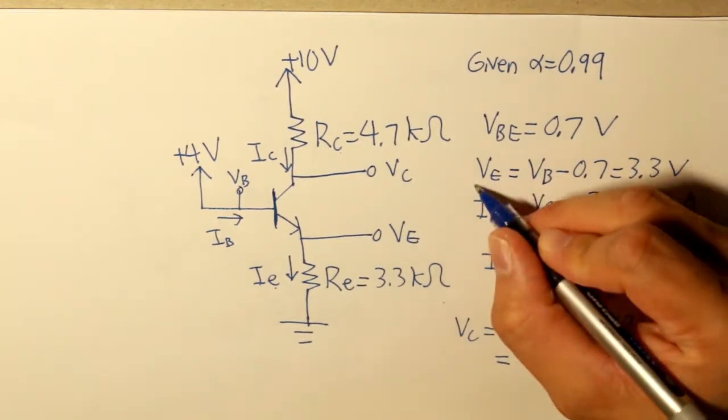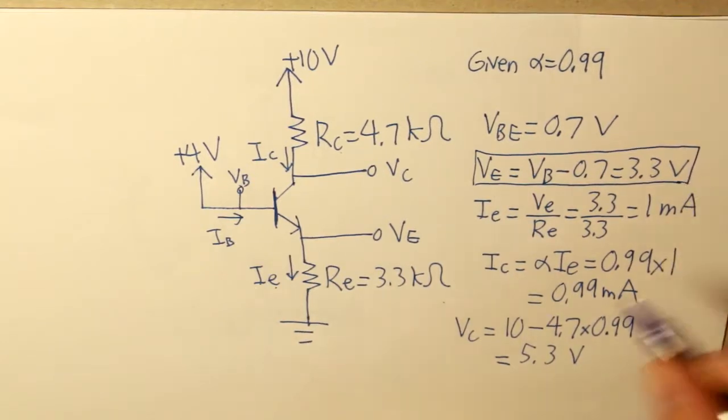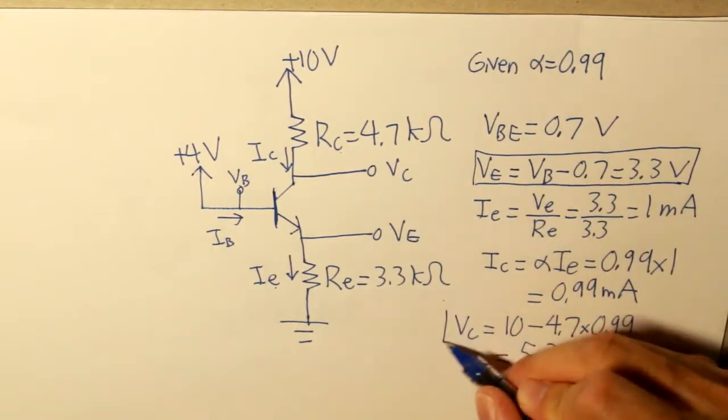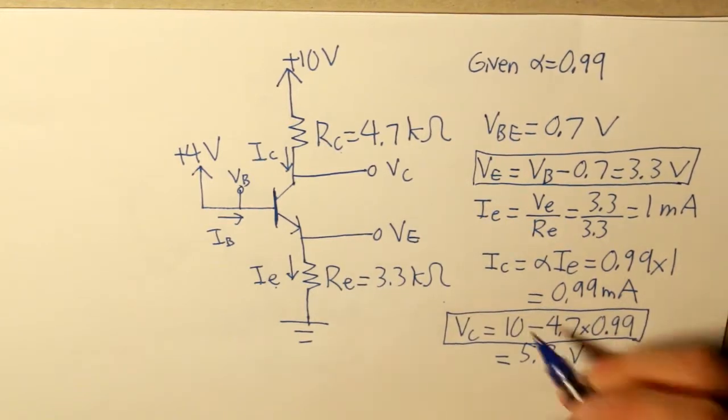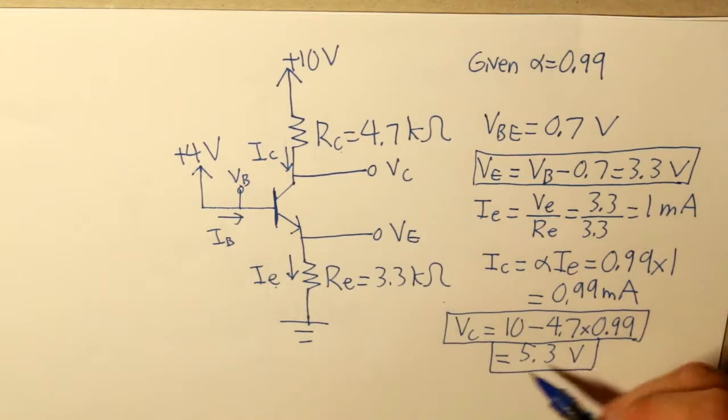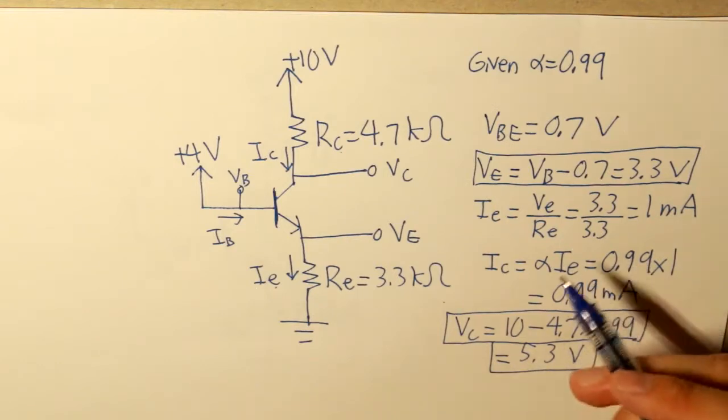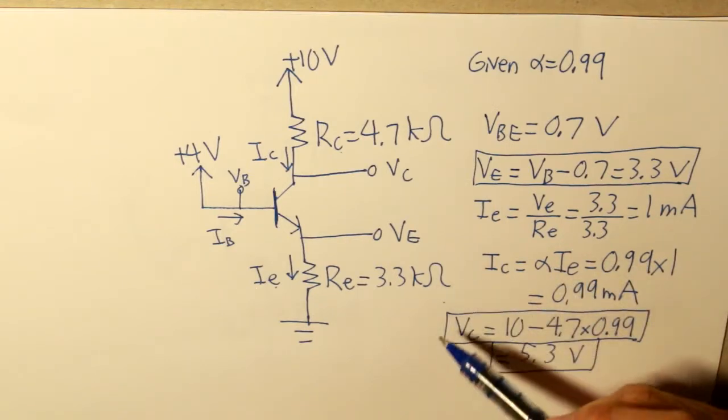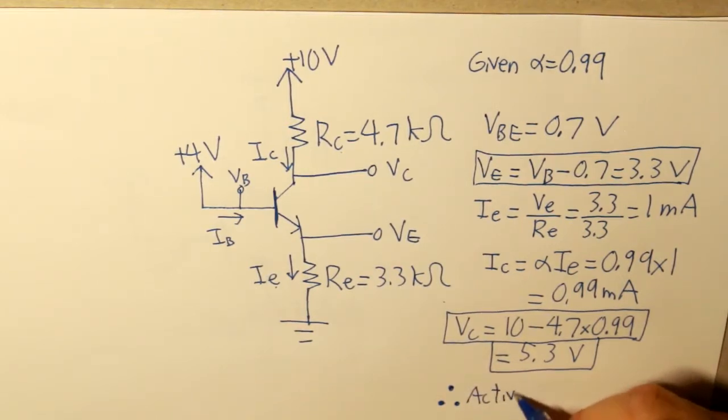So let's look at these two values. 3.3 volts for emitter voltage and 5.3 for collector voltage. So since the collector voltage is 5.3 and the emitter voltage is 3.3, that basically means that this BJT is in active mode. So let's write down our answer, active mode.